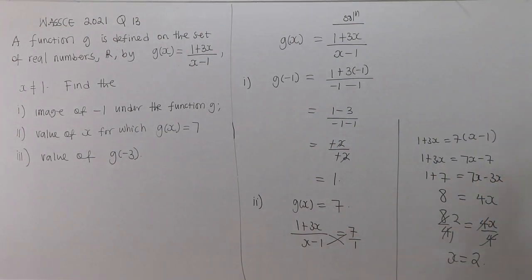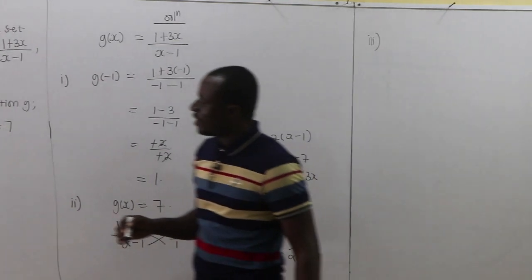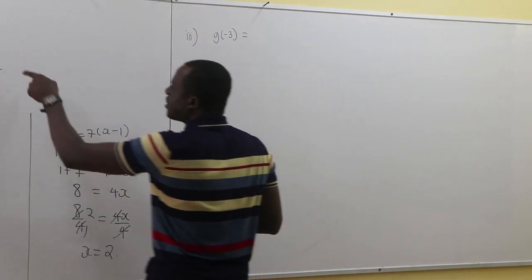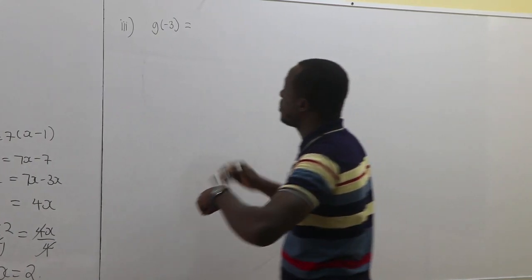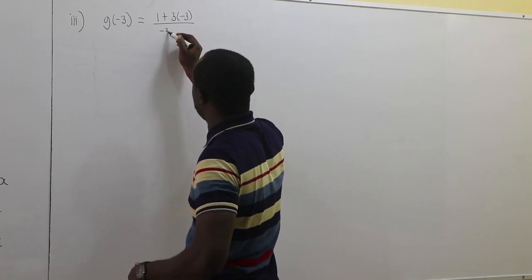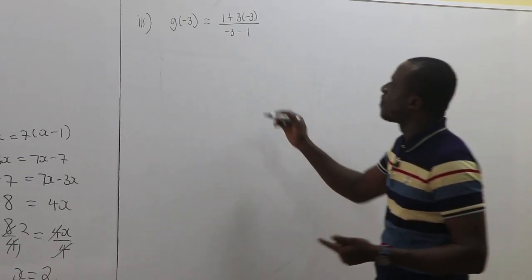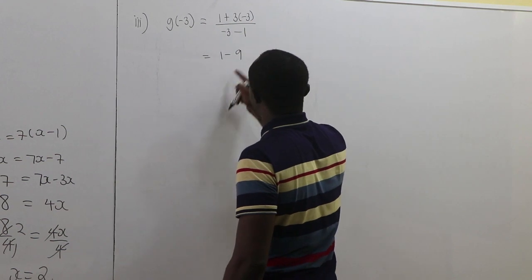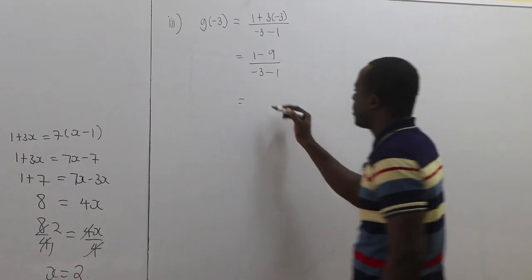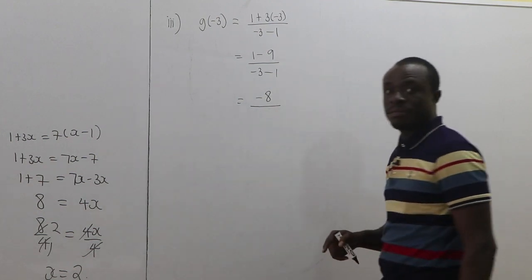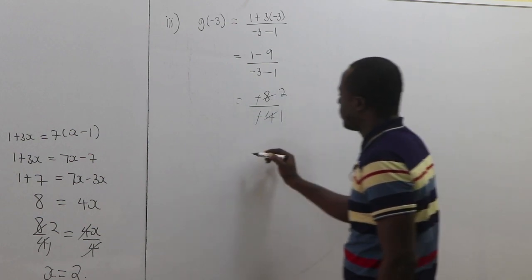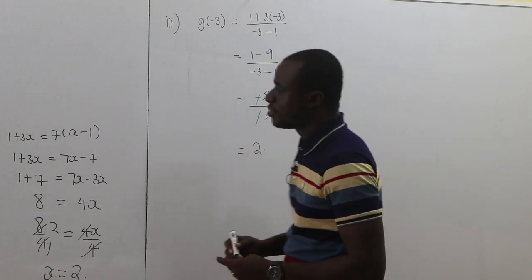Now the third one: find the value of G(-3). Wherever we see x, we put negative 3. So G(-3) = (1 + 3(-3)) / (-3 - 1) = (1 - 9) / (-3 - 1) = (-8) / (-4) = 2. The negatives cancel, giving us an answer of 2.